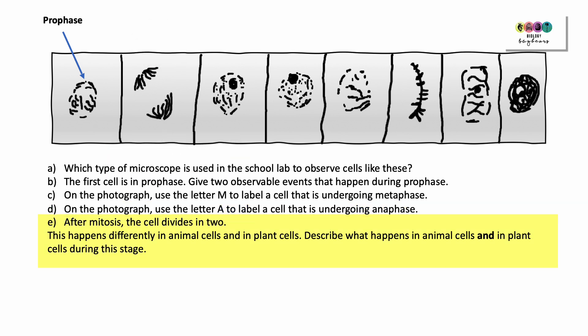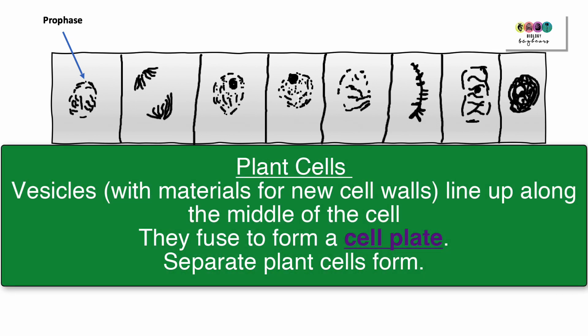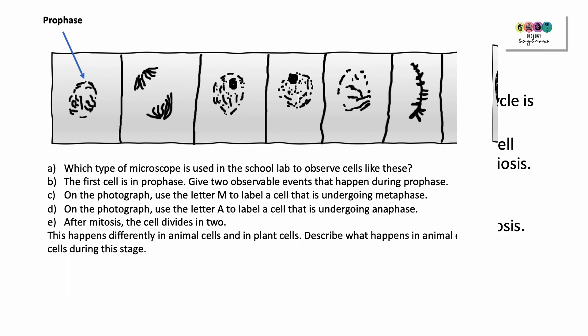After mitosis, the cell divides in two — this is cytokinesis. This happens differently in animal cells and in plant cells. In animal cells, a cleavage furrow forms and pinches the cell in two. In plant cells, you need to build new cell walls, so vesicles containing the materials for the new cell walls line up along the middle of the cell. These vesicles fuse, forming a cell plate, and this is responsible for forming the new cell walls, eventually giving two separate plant cells.